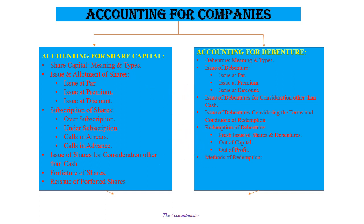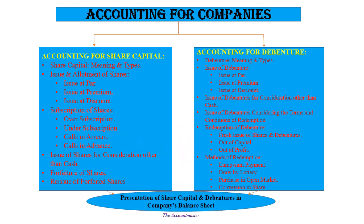Next, the methods of redemption — there are four methods: first is lump sum payment; second is draw by lottery, meaning we draw by lottery and repay whoever's name comes up; third is purchase in open market, where we can purchase our own debentures from the open market; and fourth is conversion into shares, where we convert debentures into shares. After both chapters, we will look at the company's balance sheet. Let's start the lecture.